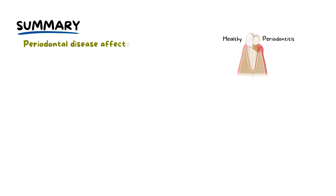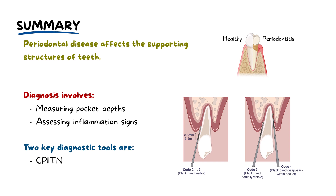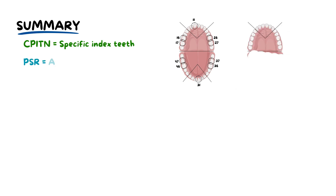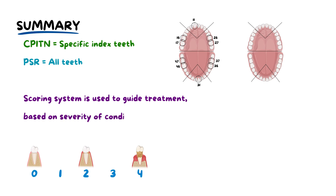To summarize, periodontal disease affects the supporting structures of teeth, necessitating early detection and management. The examination includes measuring pocket depths and assessing signs of inflammation. The two key diagnostic tools are CPITN, used for epidemiological studies, and PSR, for individual patient screening. CPITN focuses on specific index teeth per sextant, while PSR examines all teeth in the sextant. PSR uses a scoring system to guide treatment ranging from oral hygiene instructions to potential surgery based on severity. These diagnostic methods are vital for proactive management of periodontal health, allowing dental professionals to tailor treatments to individual patient needs and effectively combat the progression of periodontal disease.